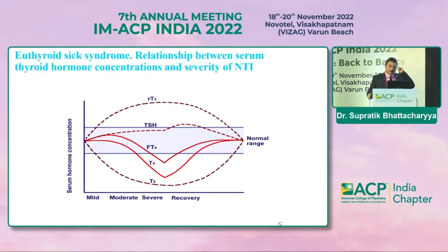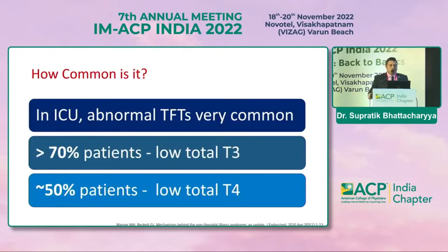This is the prognostic graph seen in euthyroid sick syndrome. There are mild, moderate, and severe categories. The lower the T3 level, the greater the severity. Gradually, during the recovery phase, T3 levels go back up again. Reverse T3 also increases and then improves as the patient recovers. In the ICU setting, abnormal TFTs are very common — more than 70% of patients show a low T3, and 50% show a low T4.